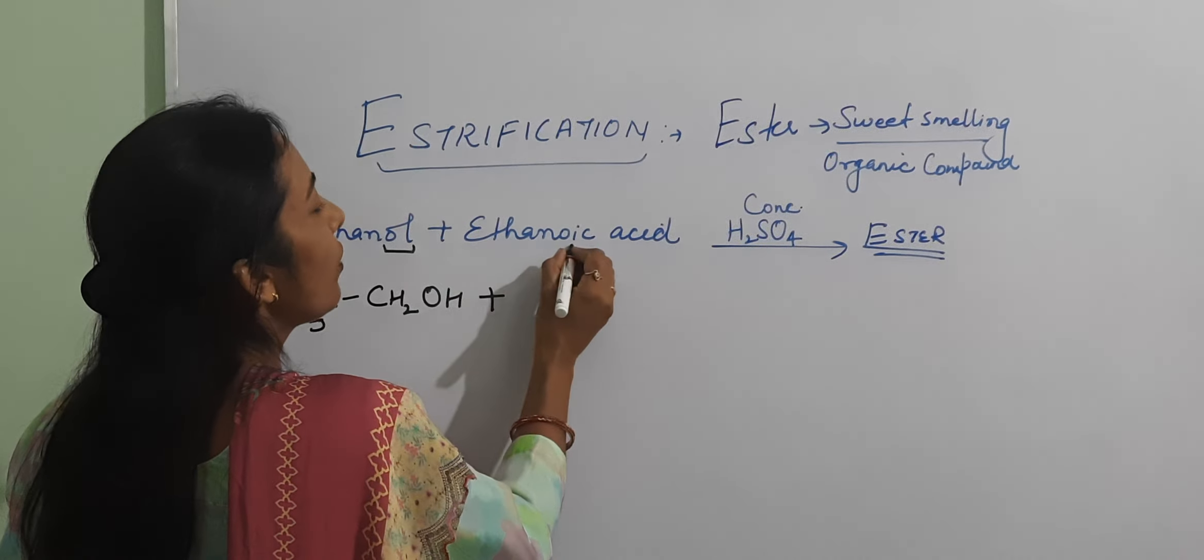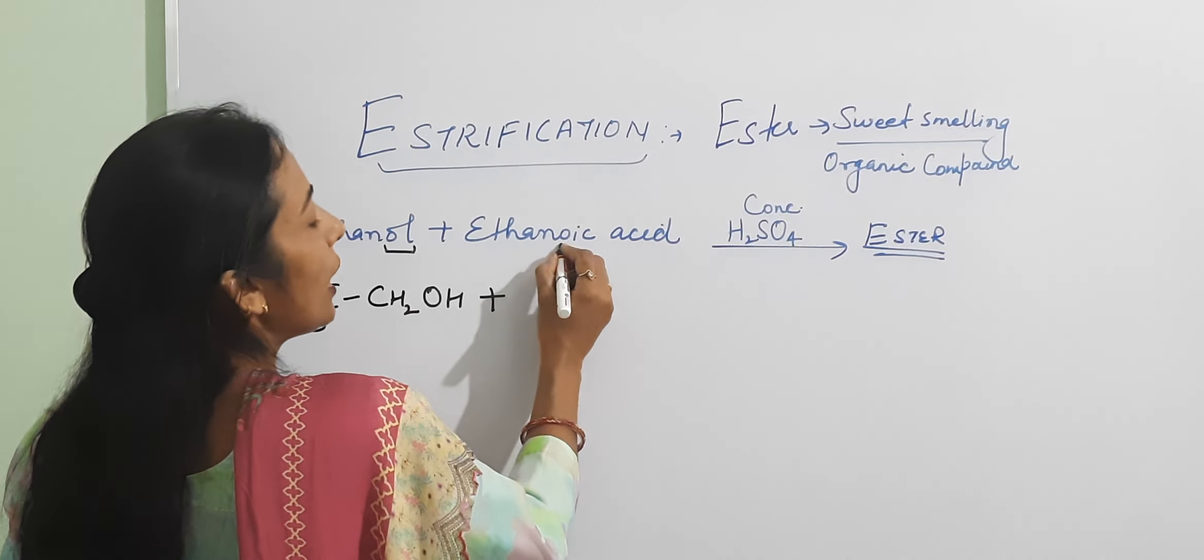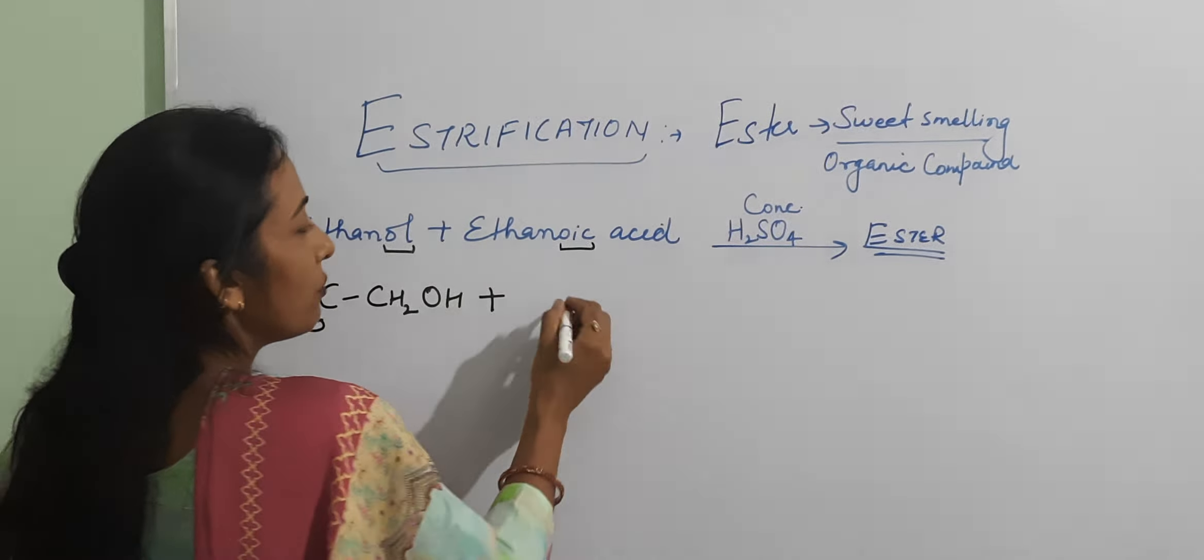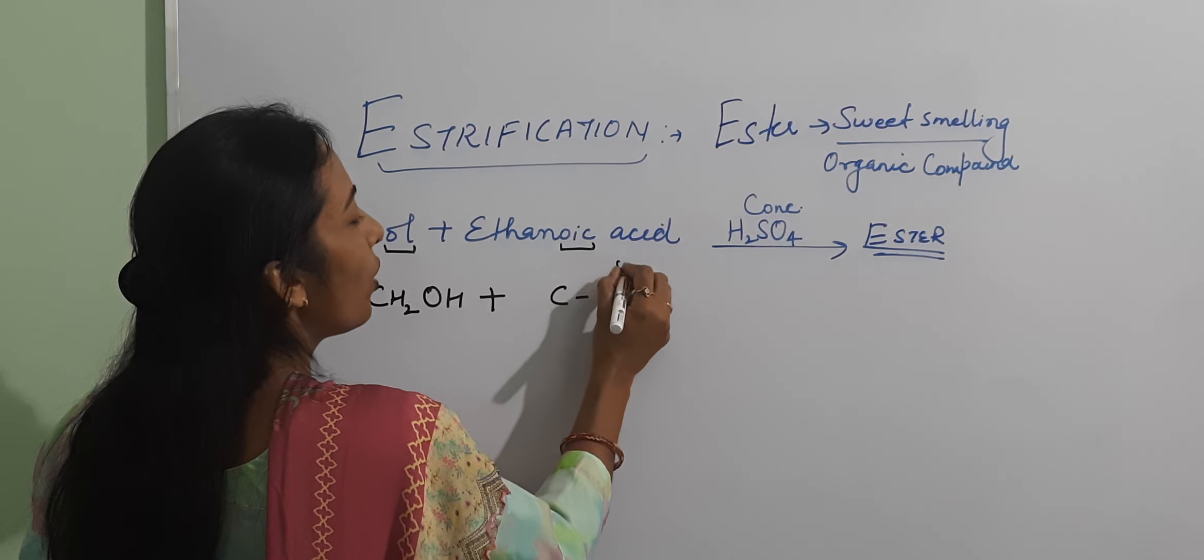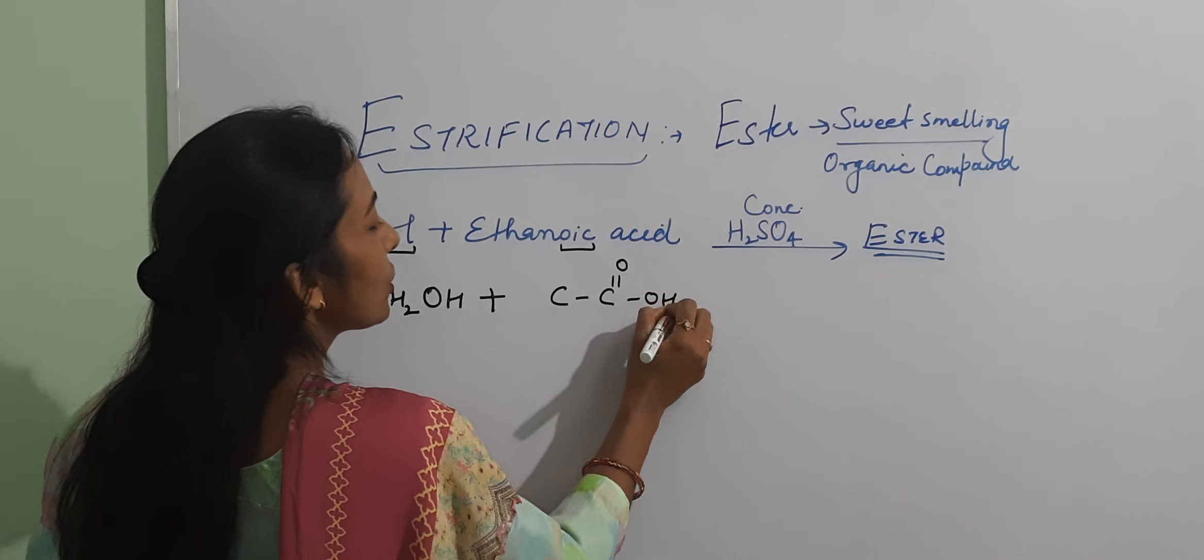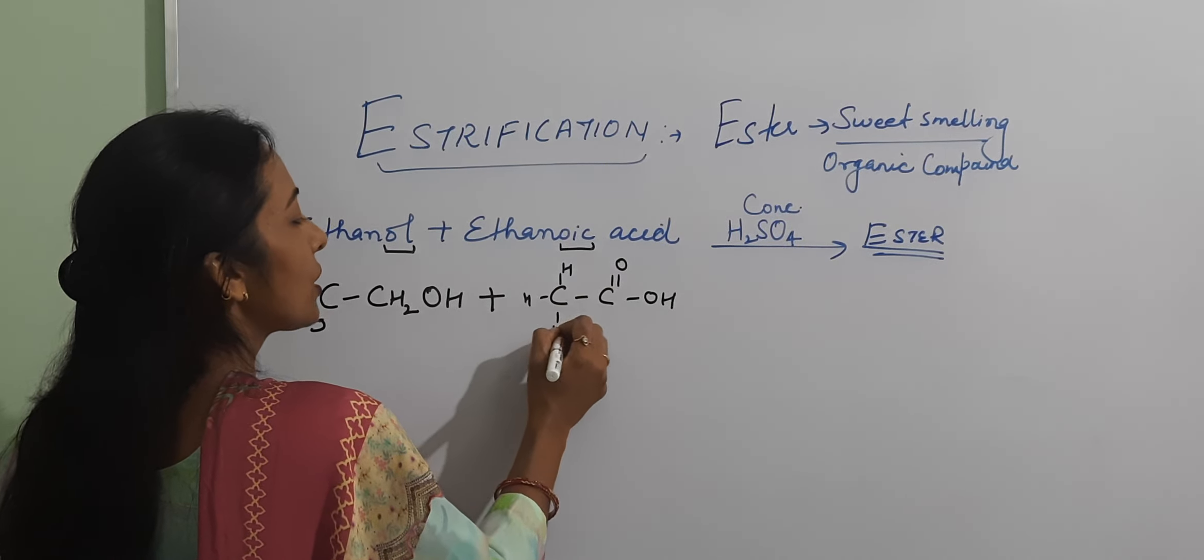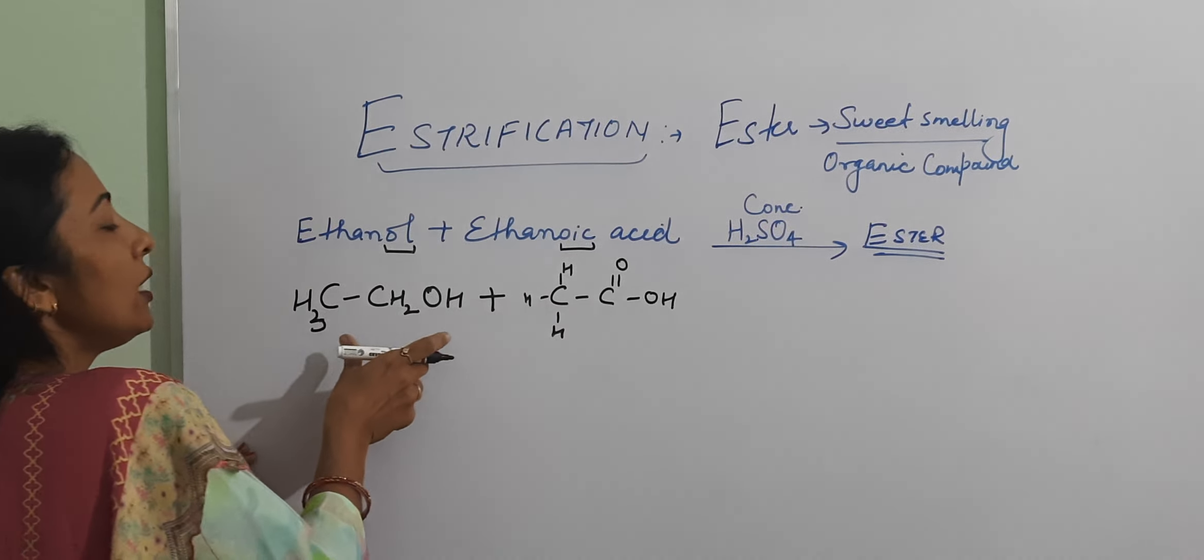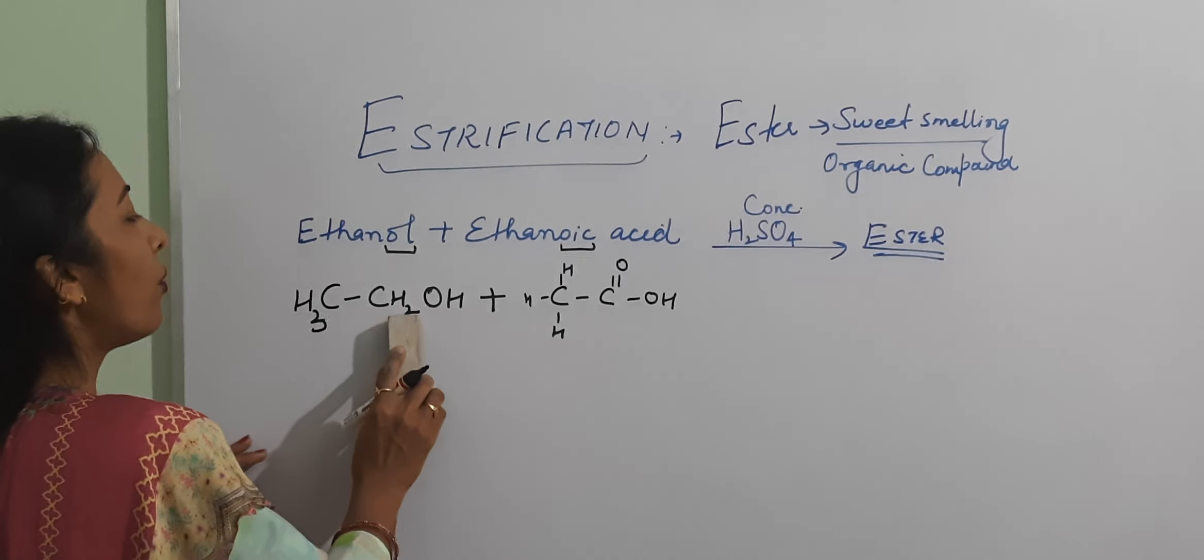Plus ethanoic acid, means 2 carbons are there. Here the functional group is C double bond O and OH group. And CH3. This is our ethanoic acid, this is our ethanol. If you want, you can also write it in expanded form.